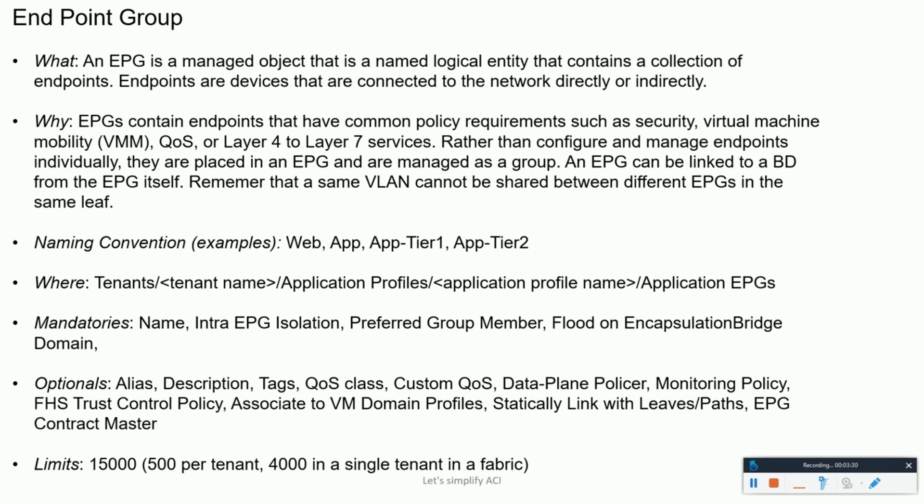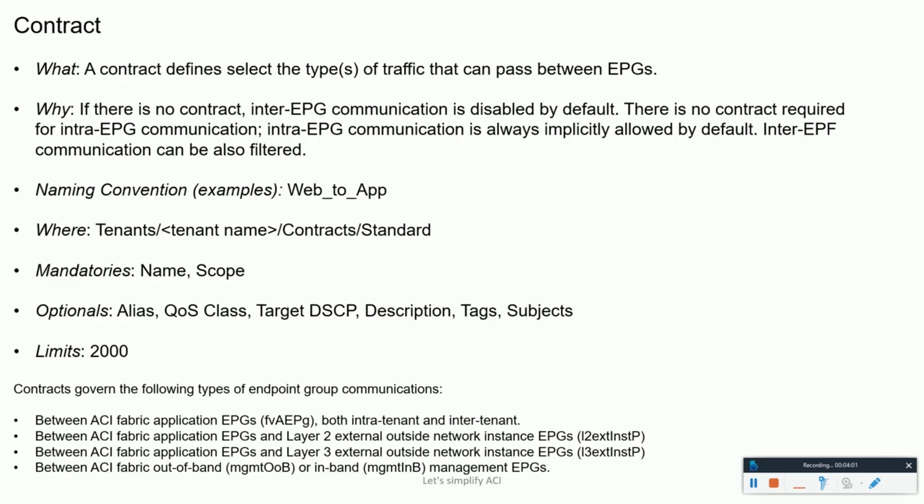Endpoint groups contain endpoints that have common policy requirements. Those common policies can be security, VMM, quality of service, and L4 to L7 services. Rather than configuring and managing endpoints individually, they are placed in an EPG, and managing multiple endpoints under an endpoint group is very simple and gives management a broader scope.